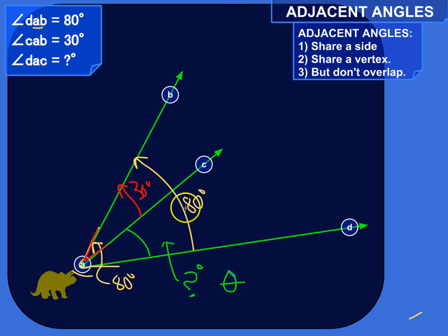So in other words, this 80 degrees is 30 degrees plus the missing information. Or because we know that angle DAC and CAB are adjacent, we know that DAC plus 30 degrees will be equal to this full 80 degrees.